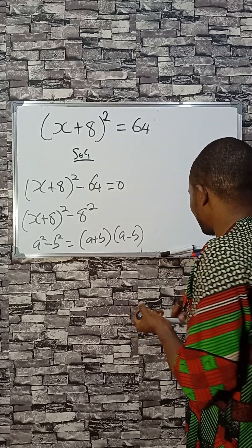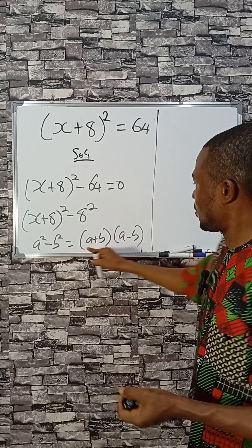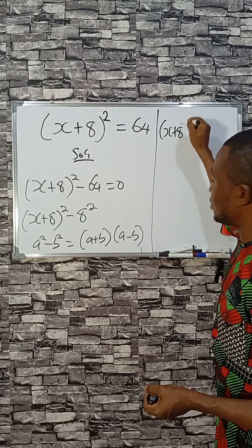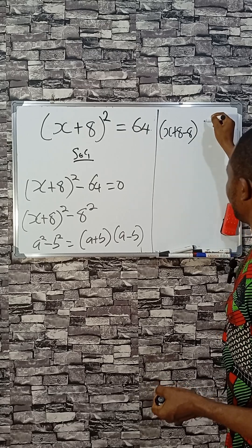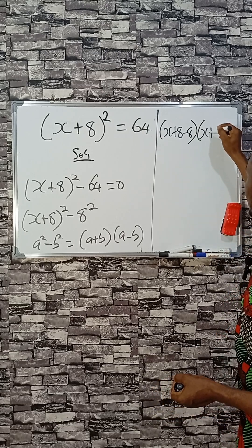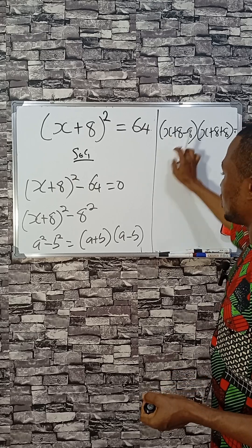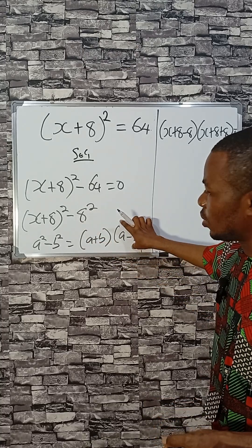So if I'm going to apply that here, I'll have this as (X+8-8)(X+8+8) = 0. X plus 8, this bracket minus 8, satisfying this one, then X plus 8 equal to zero.